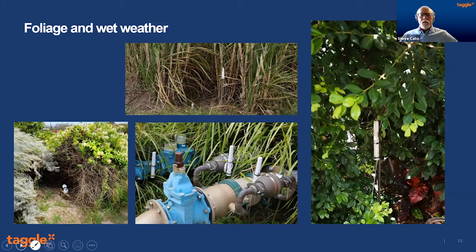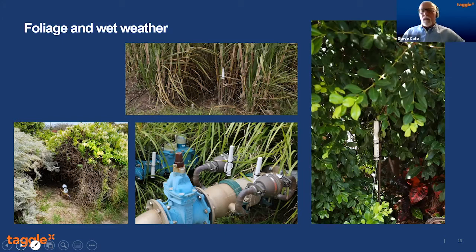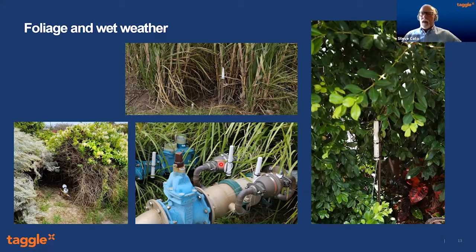The foliage grows, so it gets thicker and thicker around tags or meters, and that can change the way that particular meter works. All councils have the ability to have a chat with residents about clearing out — making a clear path to the meter. That may be something you have to do. It's not just people parking cars over the top of tags — the environment itself can change.